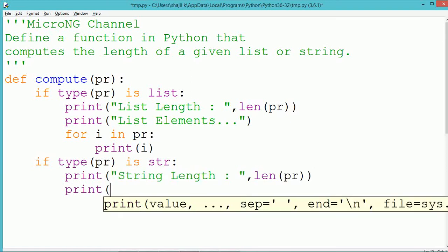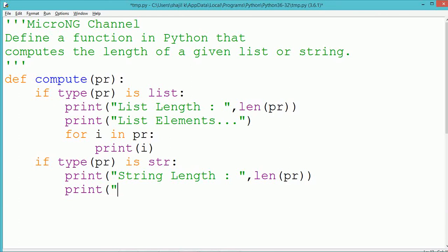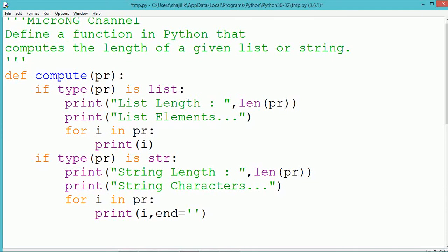We display the individual characters of the string the same way. A for loop is used where the index variable i takes each individual character from the string variable pr and it gets printed by using the print method.